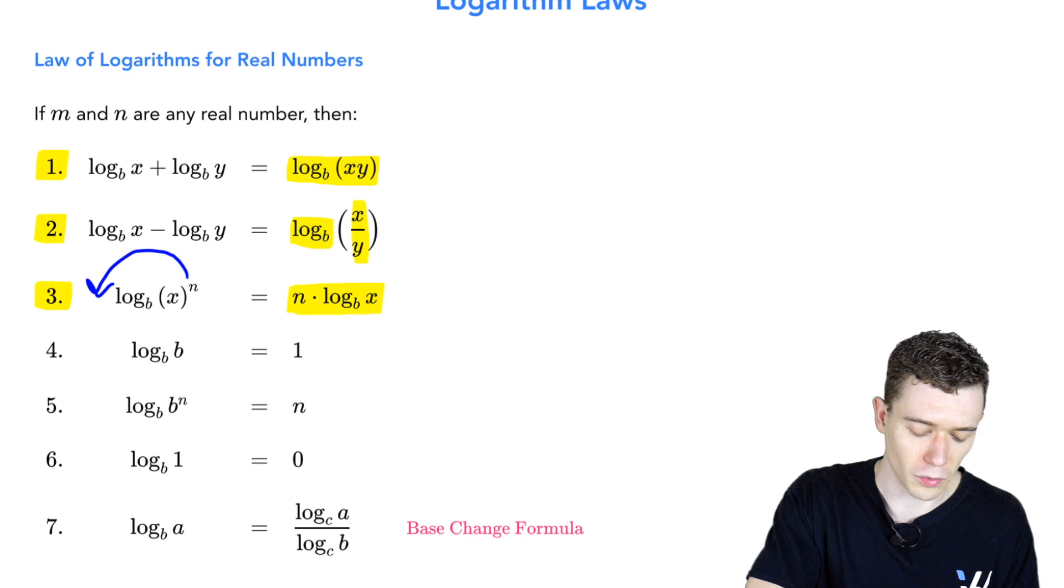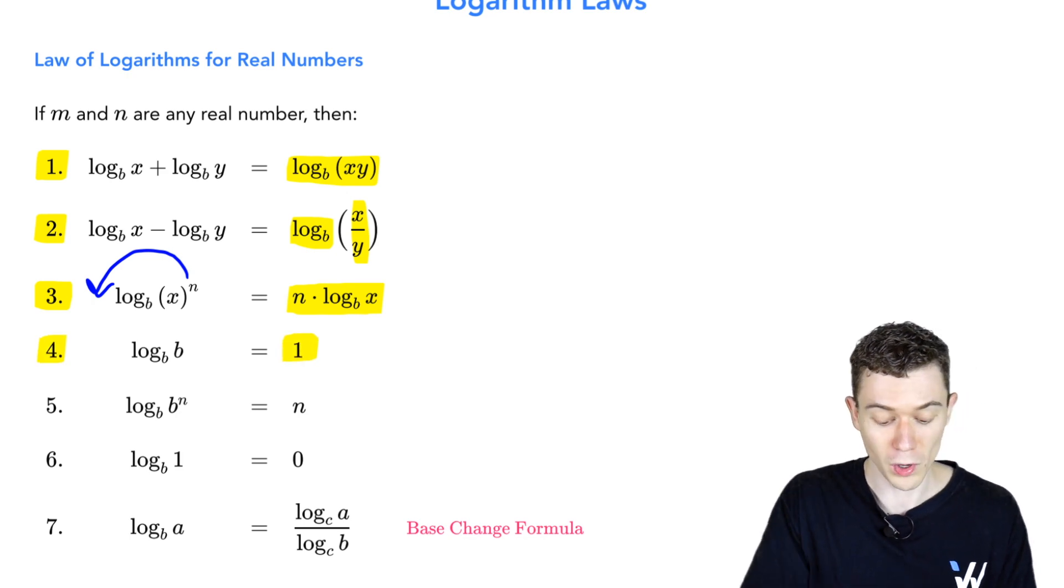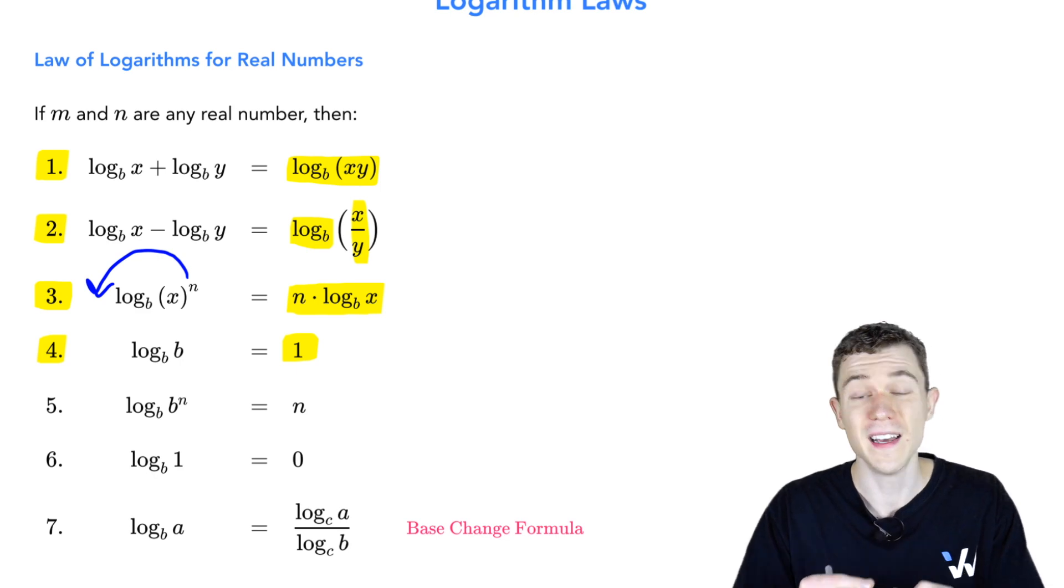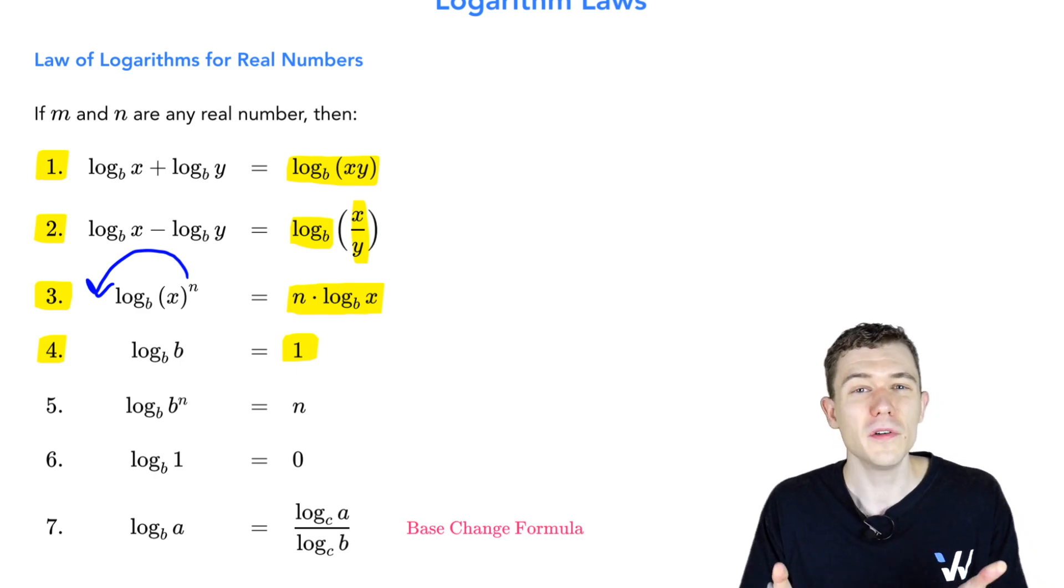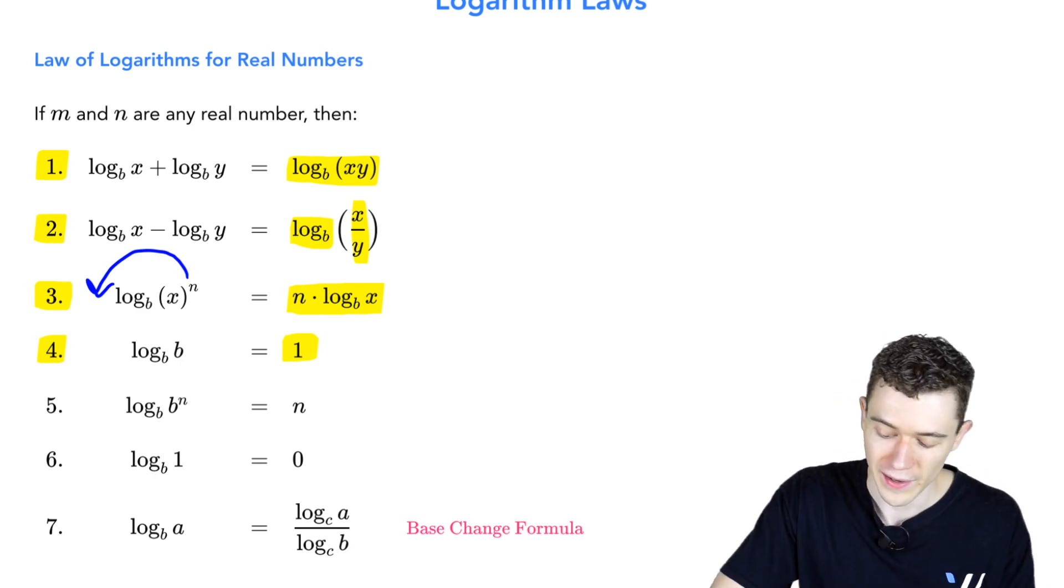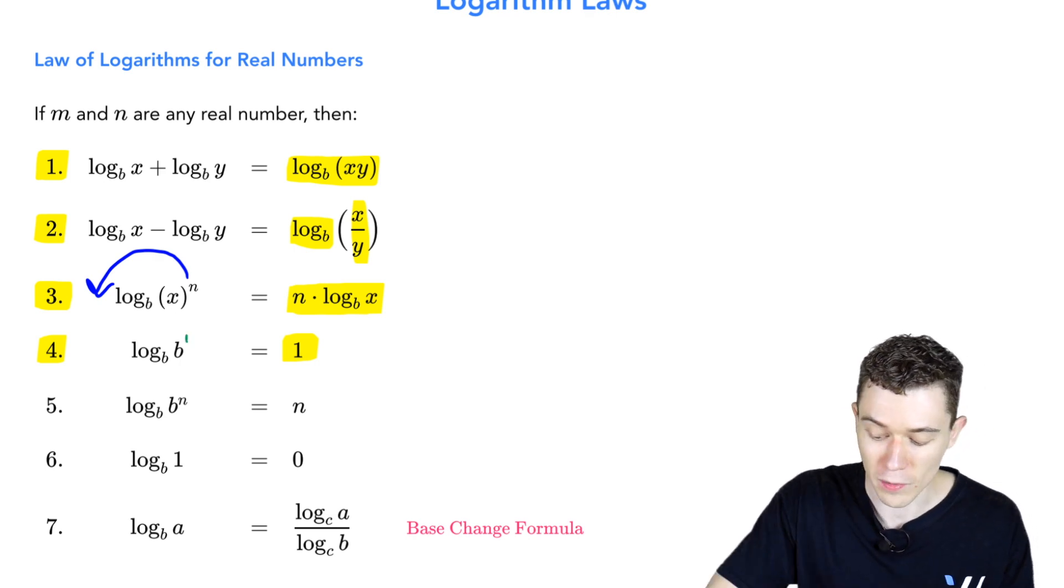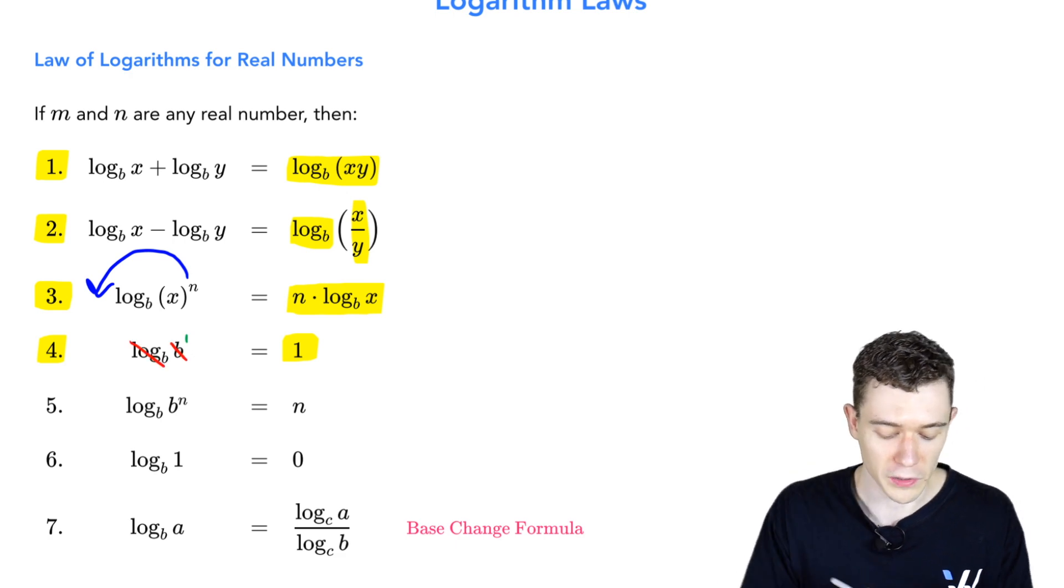Next, an interesting little one. Log base b of b is 1. That's pretty nice. Anytime you have a log base and the same inside, those cancel out and just get 1. We actually have like a little b to the first here, b to the first power, and so I sort of think, well, the log base b and the b undo each other. We're just left with that 1.